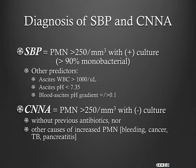Ascites pH less than 7.35 and blood-ascites pH gradient are other predictors, though we don't typically check those. CNNA — culture-negative neutrocytic ascites — is elevated PMNs without a positive culture. In my experience, we very rarely get a positive culture, probably because by the time we get to the patient and do a paracentesis, they've already received antibiotic therapy — even one appropriate dose can give you a negative culture.